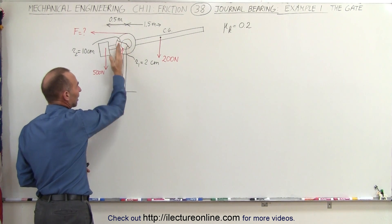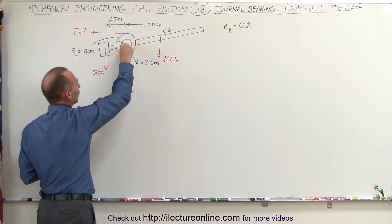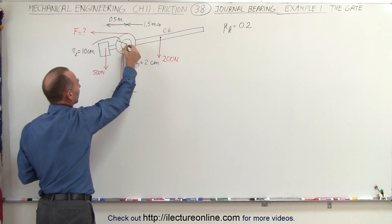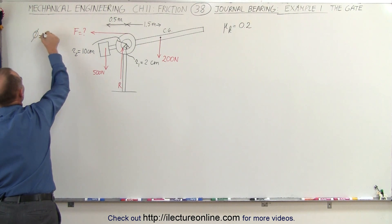Once it begins to slide, we have the reaction force right here, and there's going to be an angle between the vertical and the point where the bearing touches the housing. That angle here can be found by using the equation phi equals the arctangent, and in this case...